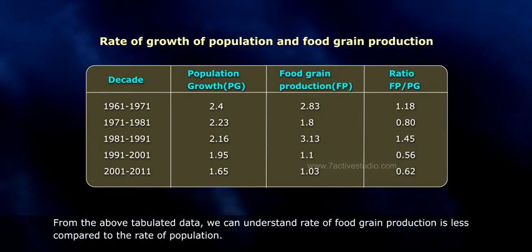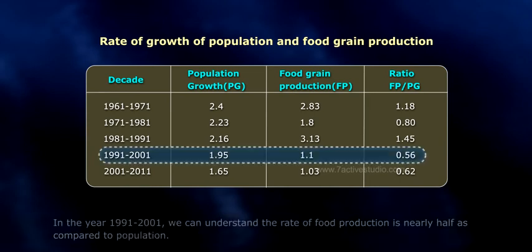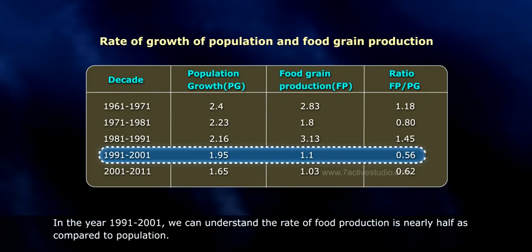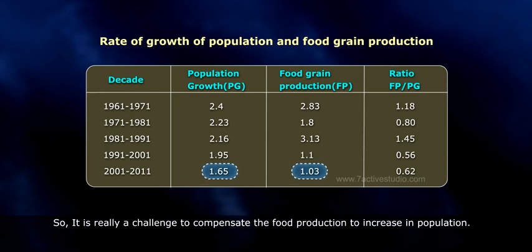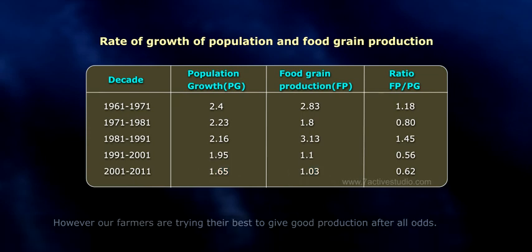From the above tabulated data, we can understand the rate of food grain production is less compared to the rate of population growth. In the year 1991 to 2001, the rate of food production was nearly half compared to population growth. We already learned that if food production doesn't meet the requirement, it results in food crisis. So it is really a challenge to compensate food production to the increase in population. However, our farmers are trying their best to give good production after all odds.